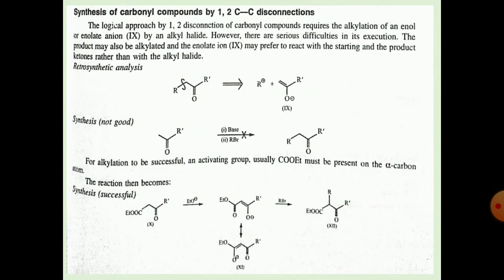Next, the synthesis of a carbonyl compound by 1,2 carbon-carbon disconnection. The logical approach by 1,2 disconnection requires alkylation of an enol or enolate anion by an alkyl ion. However, there are serious difficulties: the product may also be alkylated, and the enolate ion may prefer to react with the product ketone rather than with the alkyl halide. For the alkylation to be successful, an activating group — usually COEt — must be present at the alpha atom.